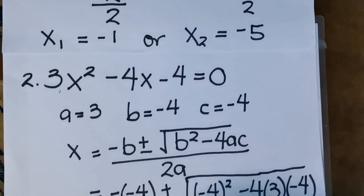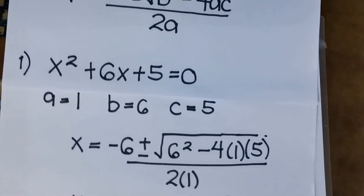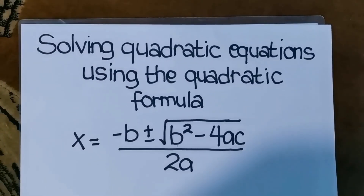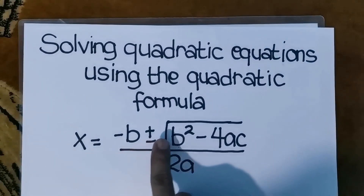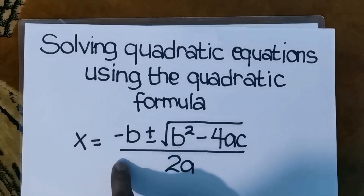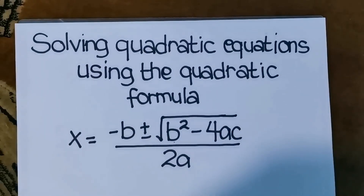That's how we get the solution set of given quadratic equations using the quadratic formula. The formula is x equals negative b plus or minus the square root of b² minus 4ac, all over 2a. This is one of the methods for finding the solution of quadratic equations. I hope you learned something today. Don't forget to like, share, and subscribe. See you on our next video lesson.